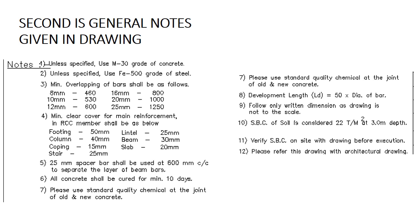Minimum clear cover for main reinforcement in RCC members shall be as follows: in footing, minimum 50 mm clear cover must be provided on site; in beam it is 30 mm; and in slab it is 20 mm. Curing period of concrete is also given, which is minimum 10 days after the casting of concrete. Notes on use of chemicals on joins and soil bearing capacity of the construction site are also given in the general notes.